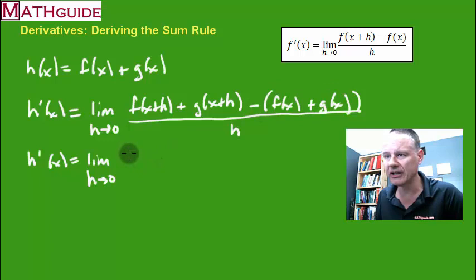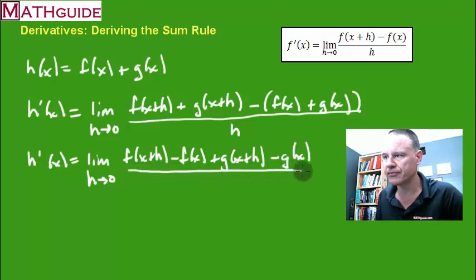So really what do I have here? I have f of x plus h minus f of x. I also have this term g of x plus h. And I'm subtracting g of x. And all of this has h in the denominator. All right. Good so far, right?